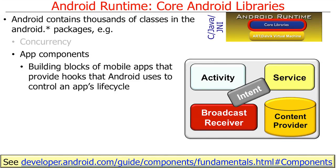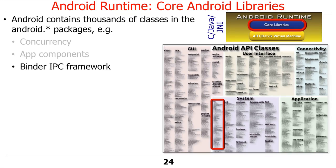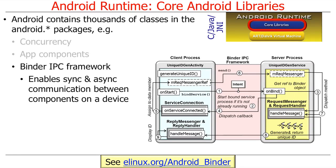Intents are used as the glue to coordinate the interactions between activities, services, and broadcast receivers — we talked about those in the previous course as well. Another interesting set of classes provided by Android are the Binder interprocess communication framework. The Binder framework enables synchronous and asynchronous communication to occur between various components within a mobile device. In particular, the Binder framework is typically used to communicate across processes running within one mobile device, in contrast to the networking mechanisms in java.net, which are typically used to communicate from the device to a remote server.